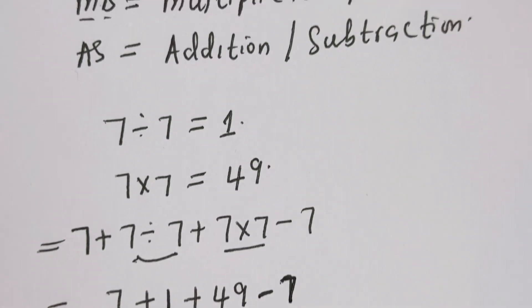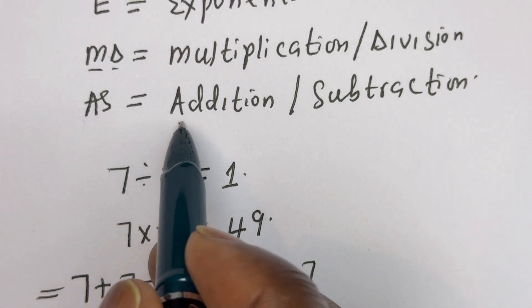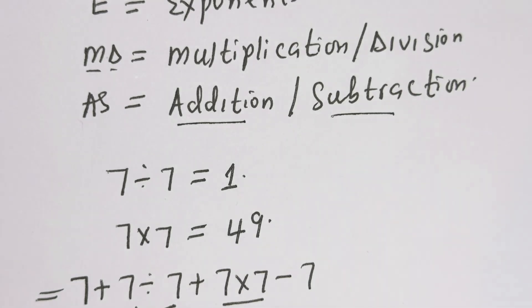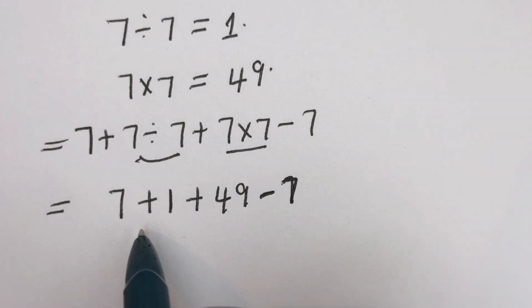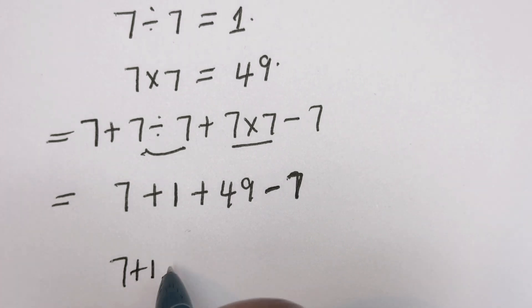Now at this point, let's consider the addition and subtraction. The addition is 7 + 1 = 8.